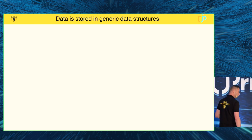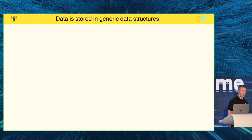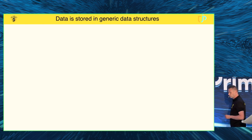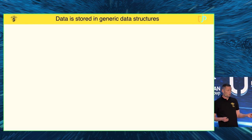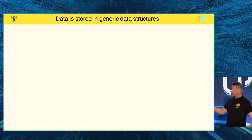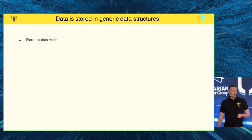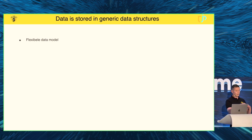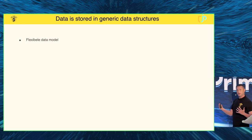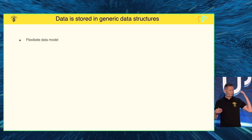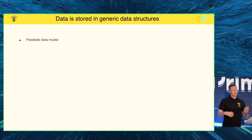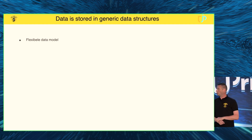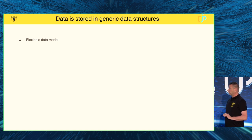Data should be stored in generic data structures — that was the second principle. These would be lists, queues, or maps, which we already have in Java. This allows for a flexible data model: if you want to add a new field to one of these data structures, it would be really easy. With a map, you could use a key-value structure where the key is the field name and the value is the field value, so you can quickly react to changes.